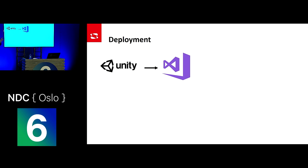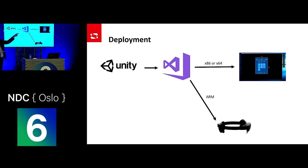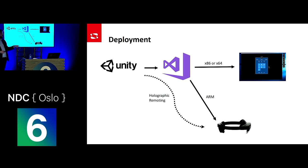To deploy, you build from Unity to Visual Studio, then deploy to either the HoloLens emulator on x86 or 64, or build for ARM and deploy to the HoloLens 2. There will be an option in the future for holographic remoting — running the application on your development laptop and streaming it to the HoloLens 2, sending a video stream and receiving all input back. That's not supported yet for HoloLens 2 but is supported for HoloLens 1, and can be a great way to speed up development without the full deploy cycle.